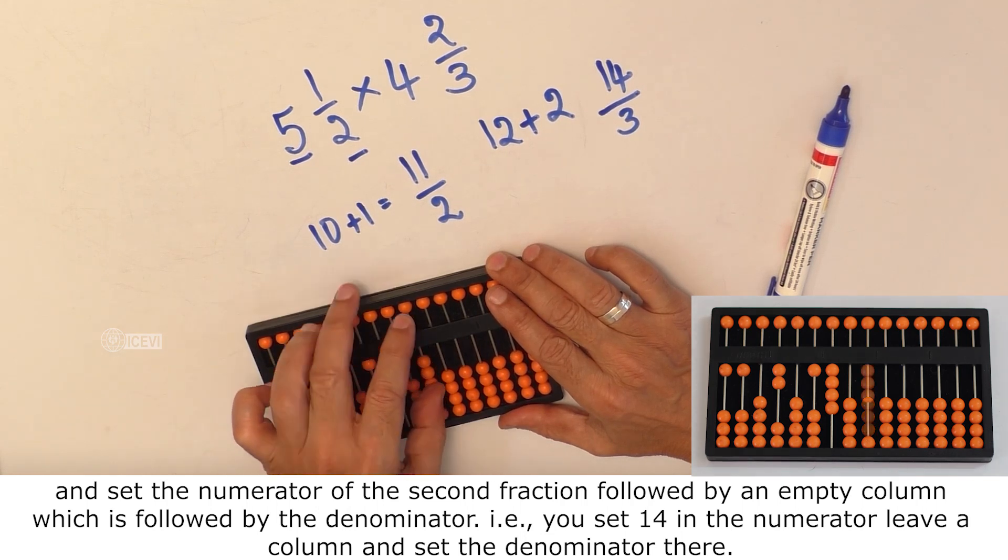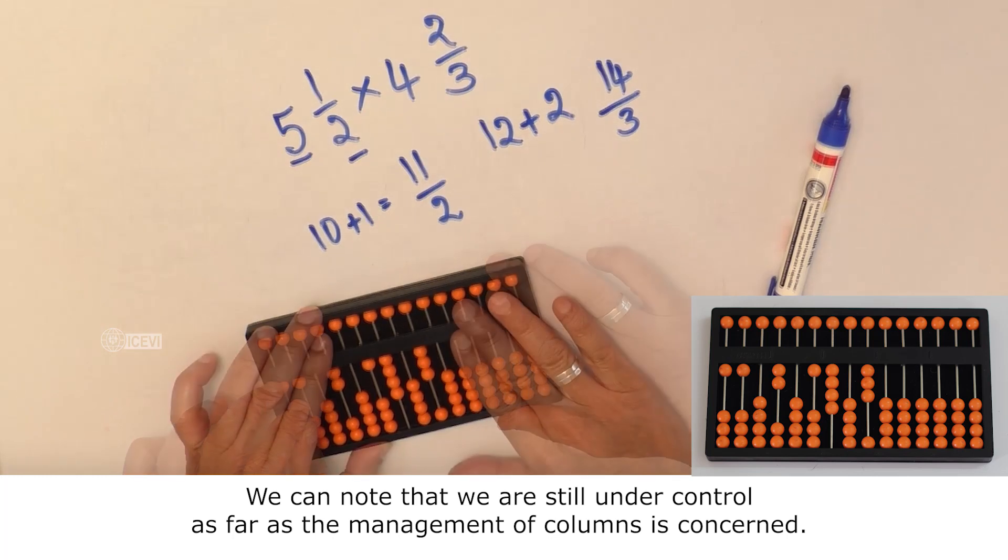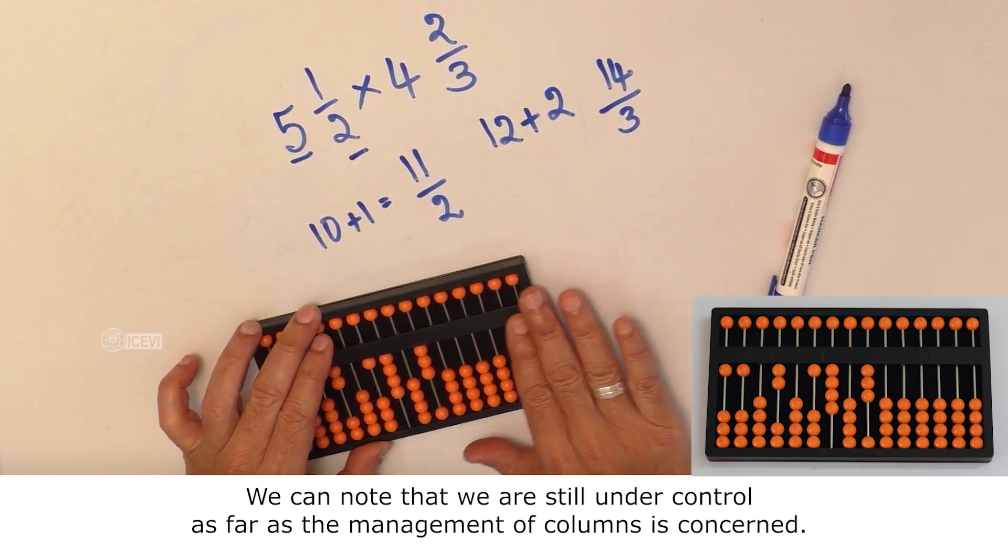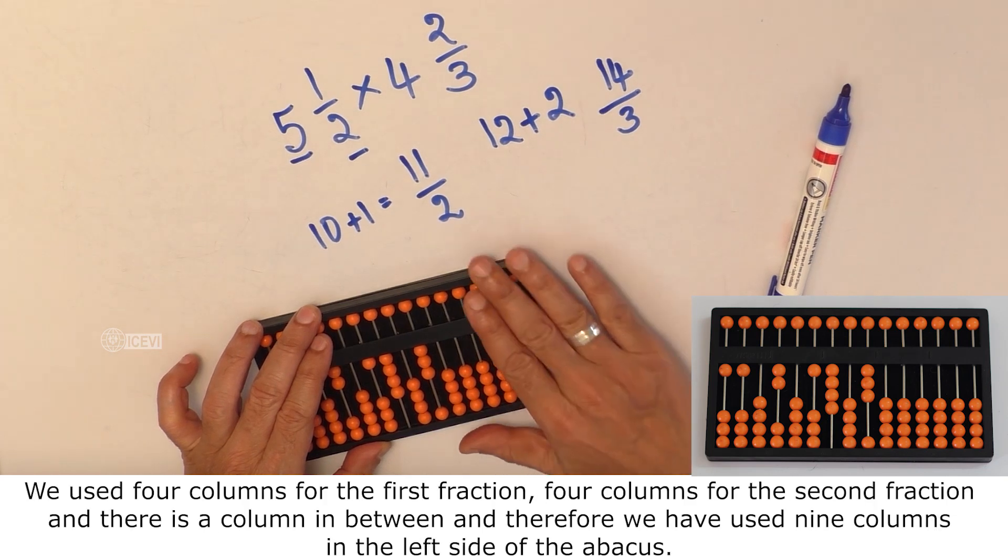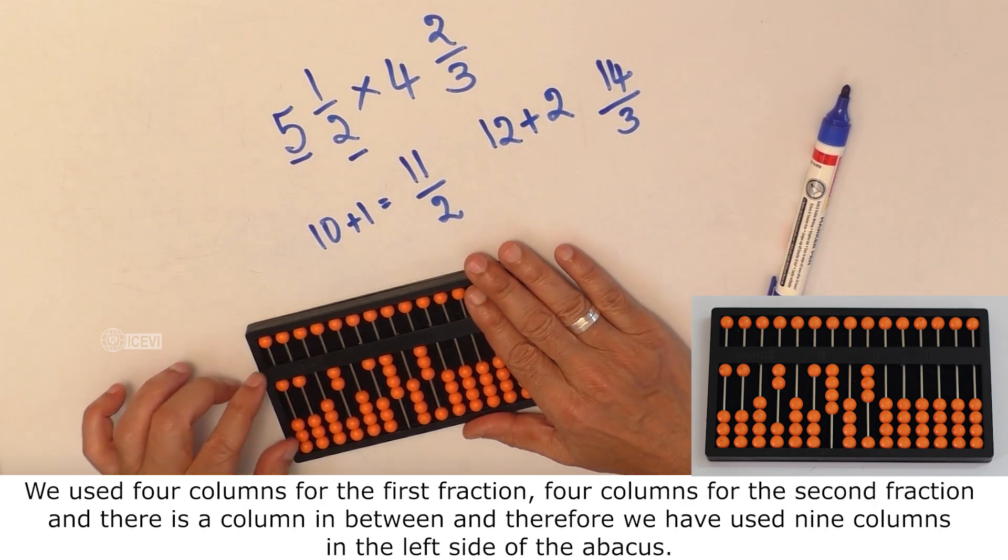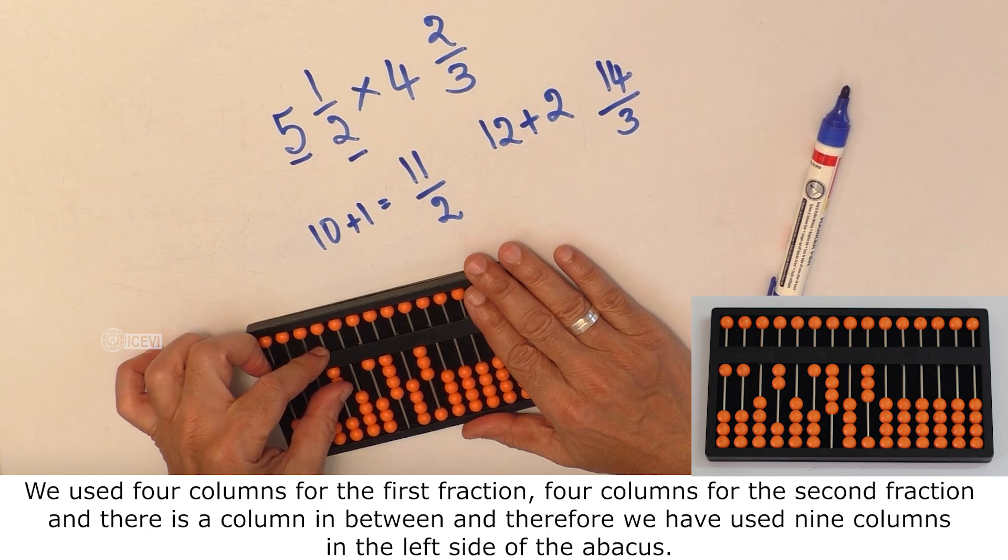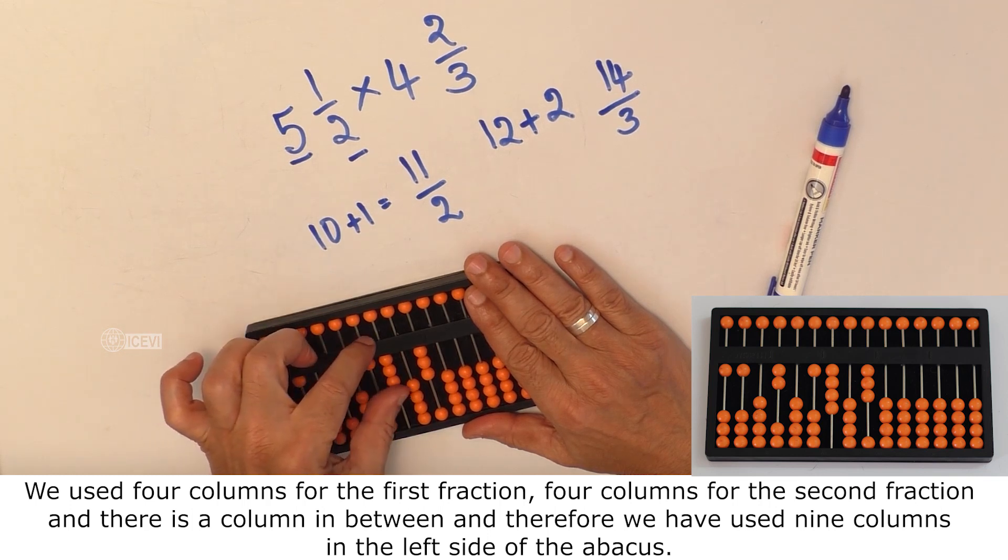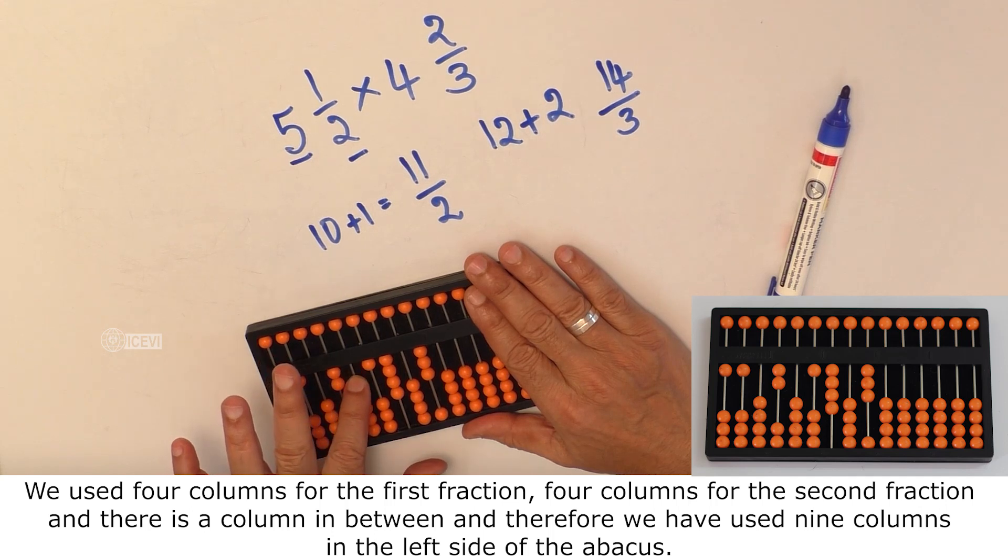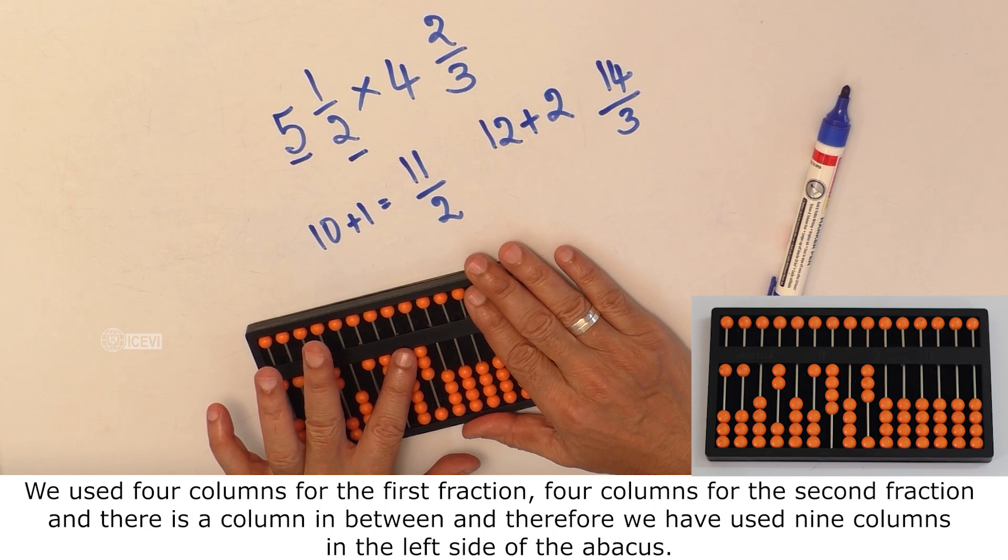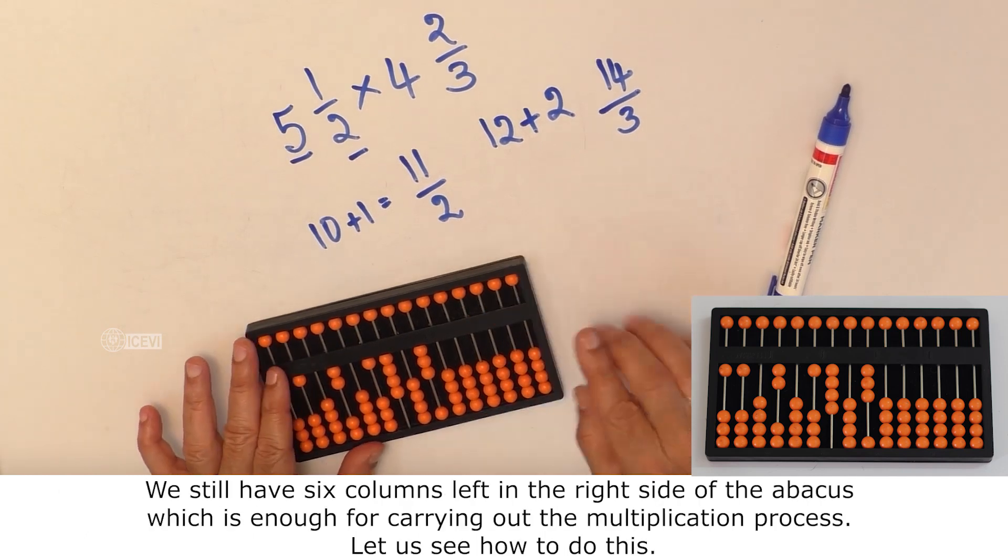We can note that we are still under control as far as the management of columns is concerned. We used 4 columns for the first fraction, 4 columns for the second fraction, and there is a column in between. And therefore we have used 9 columns in the left side of the abacus.